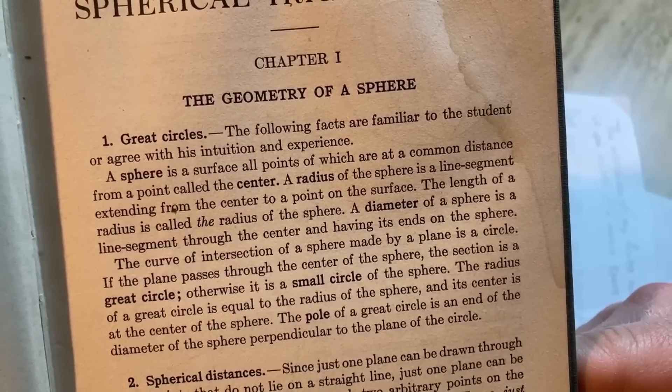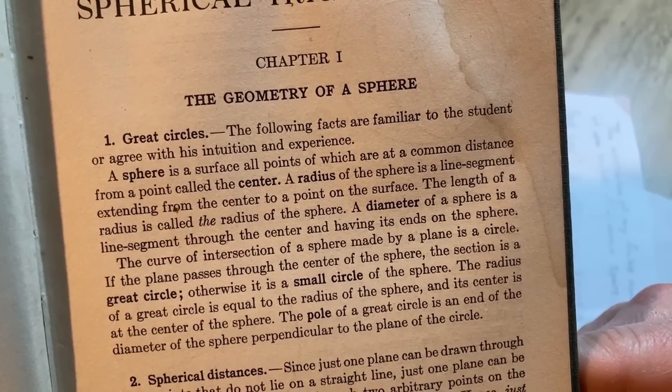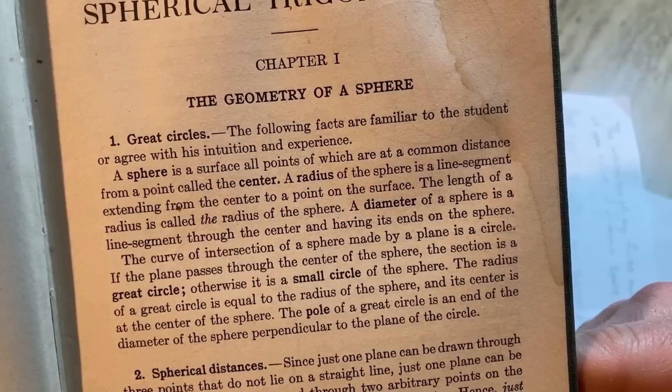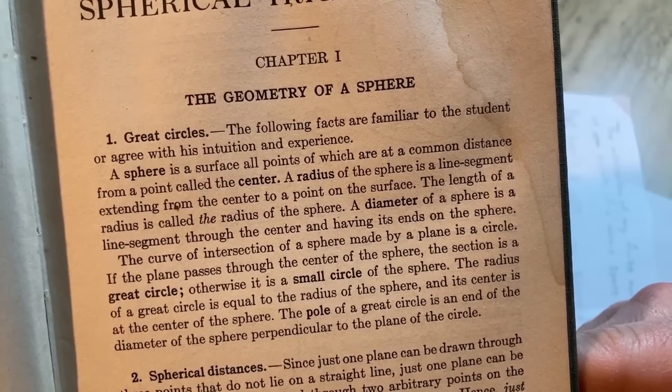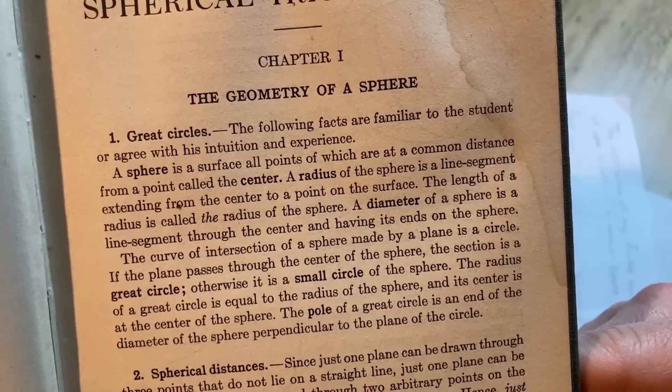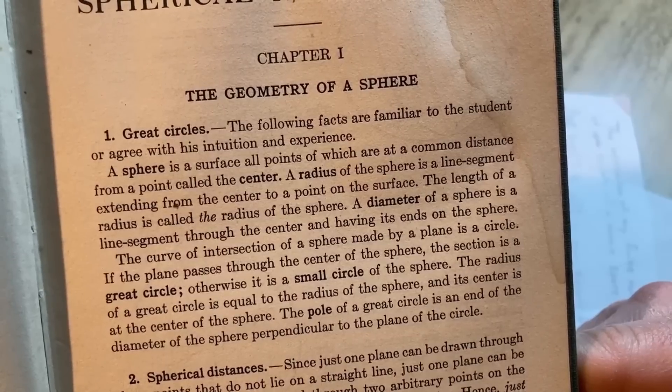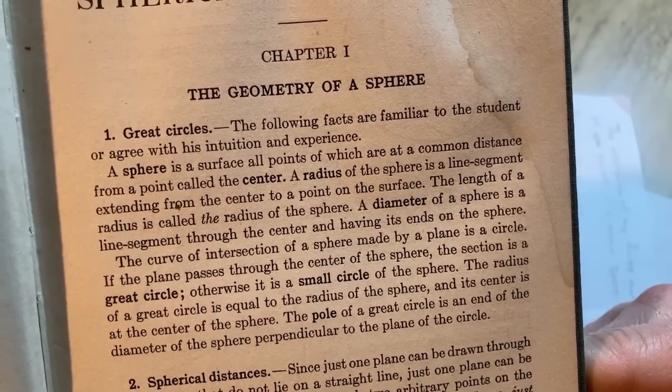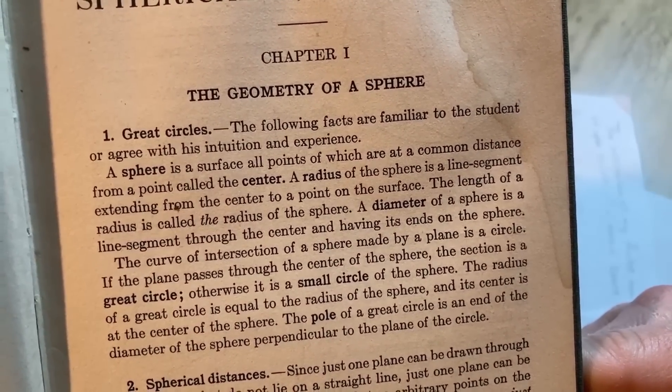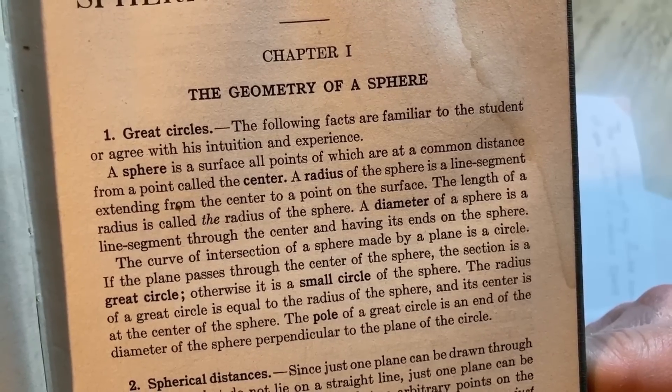Okay, if the plane passes through the center of the sphere, the section is a great circle. Otherwise it is a small circle of the sphere. The radius of the great circle is equal to the radius of the sphere and its center is at the center of the sphere. The pole of a great circle is an end of the diameter of the sphere perpendicular to the plane of the circle.